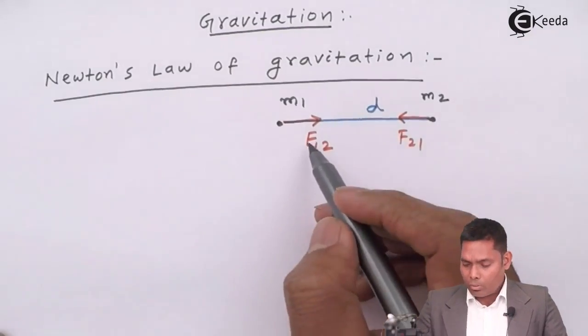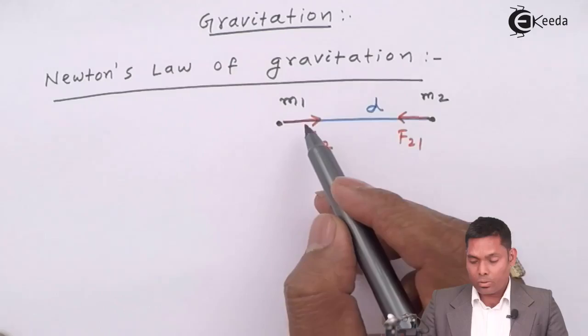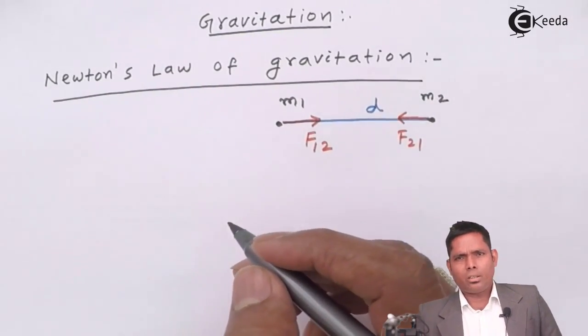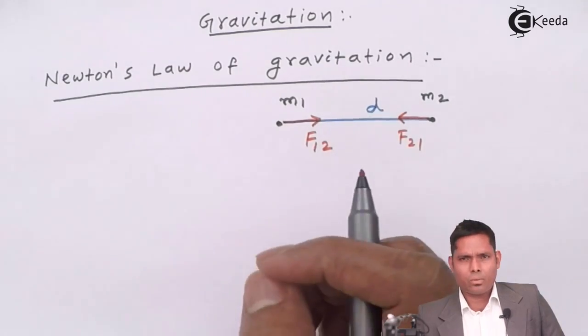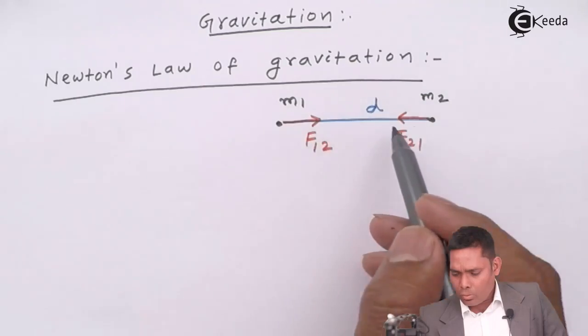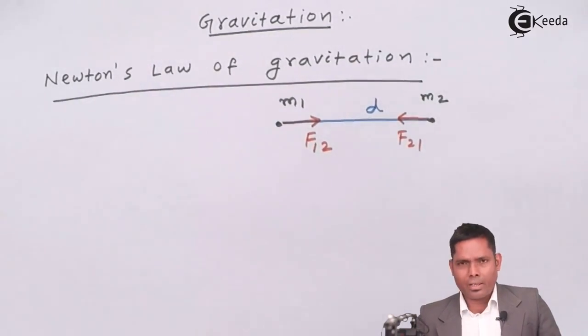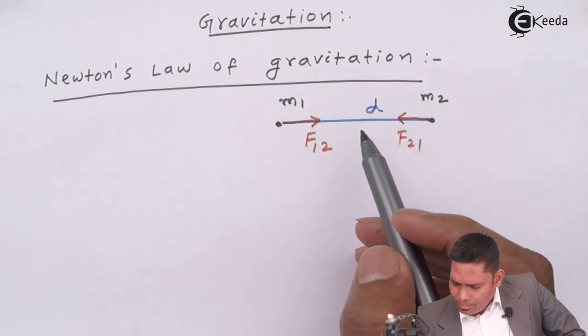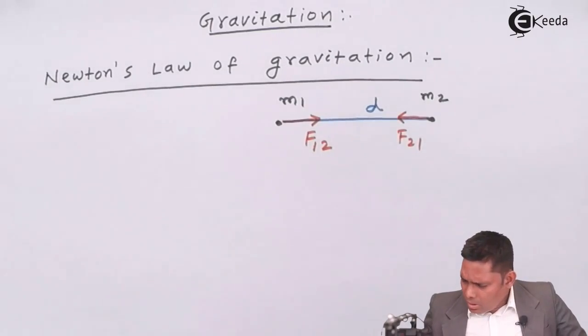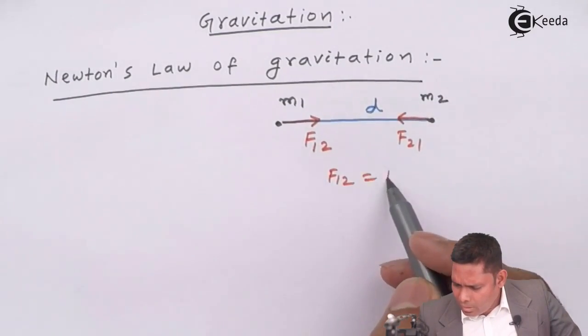It says that the magnitude of these two forces are same, but what is the magnitude? This force or that force, they exert equal amount of force on each other, but the directions are opposite. These are called central forces because the forces act on the line joining two masses along the direction, along the line joining two masses. And the statement is that the force, Newton says that these forces are equal in magnitude.